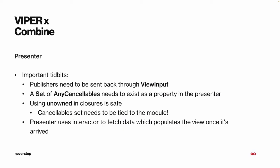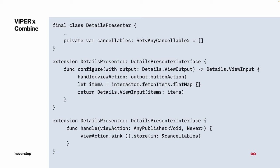In the Presenter, much the same changes apply — publishers are sent back with the ViewInput, and we also keep a separate set of cancellables. Unowned closures are safe to use here as well. The Presenter leverages the Interactor to fetch data, then uses it to populate the View once the data arrives, providing error handling, formatting, or whatever else is needed. The configure function is the main binding point — we handle button actions in a sink closure and fetch items from the Interactor, passing them back to the View via the ViewInput.